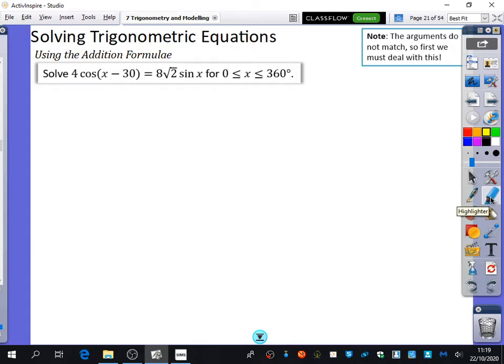This equation that I have is 4 cos(x - 30) = 8√2 sin x, and we want to solve it for x being between 0 and 360 degrees. Now the most important thing that you should look at when you're solving a trig equation is whether it is all in the same language. And when I say the same language, I mean that all of the arguments are the same.